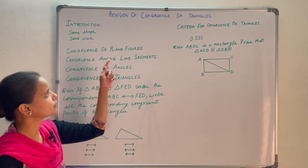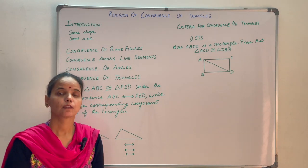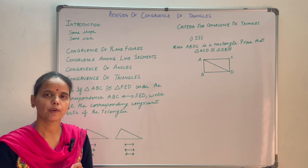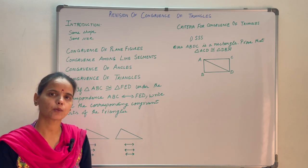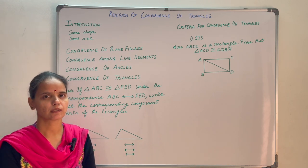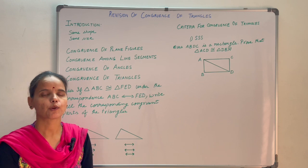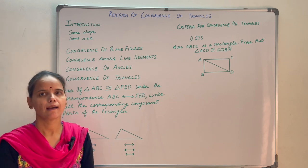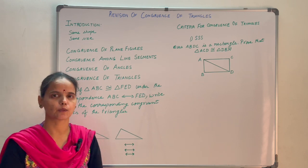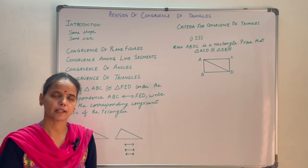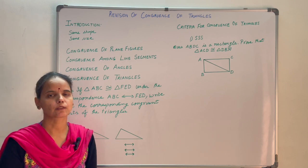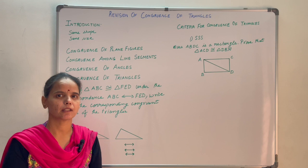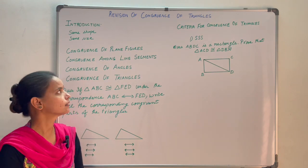Congruence among line segments. Two line segments are said to be congruent when they are equal in measure — their lengths are the same. For example, if AB equals 5 cm and CD equals 5 cm, then AB is congruent to CD, or you can say AB is equal to CD.